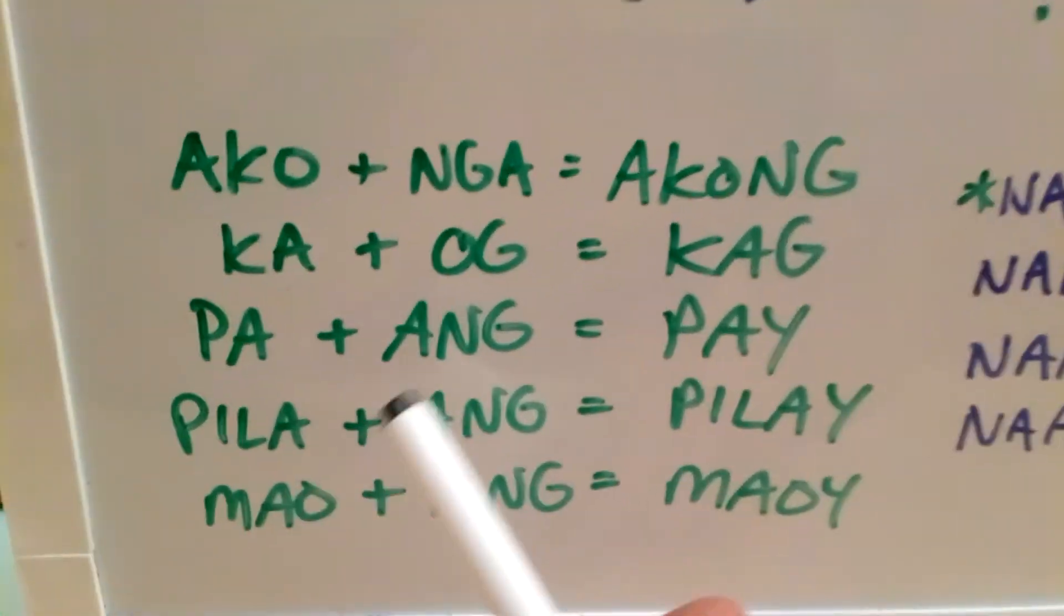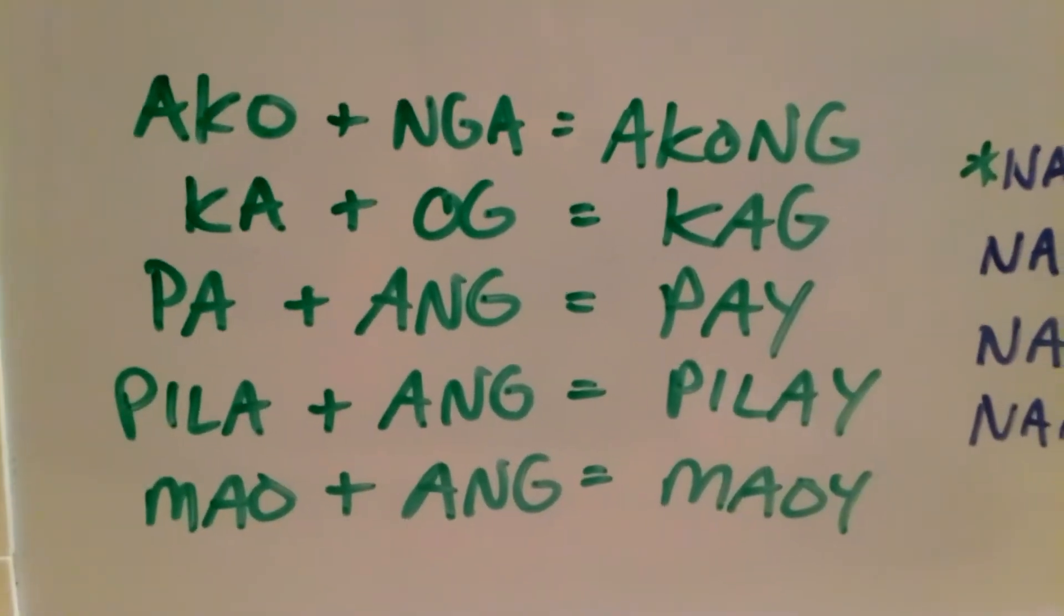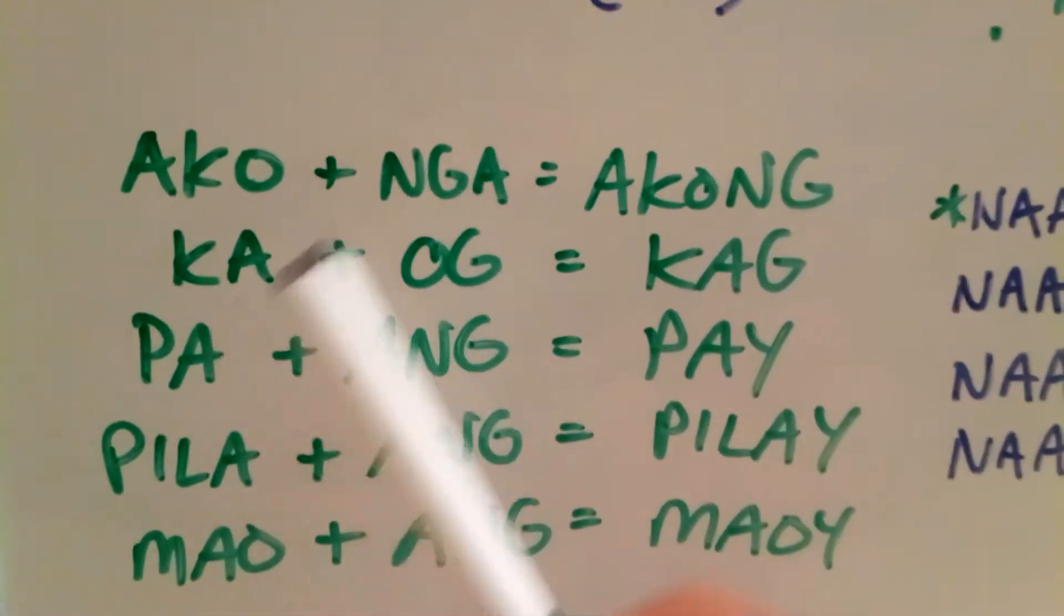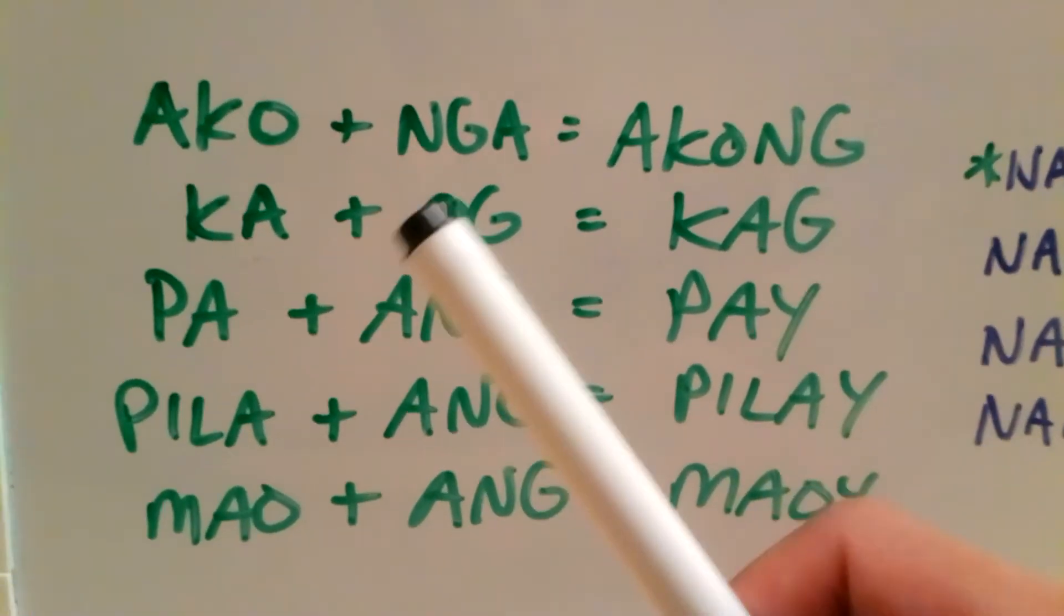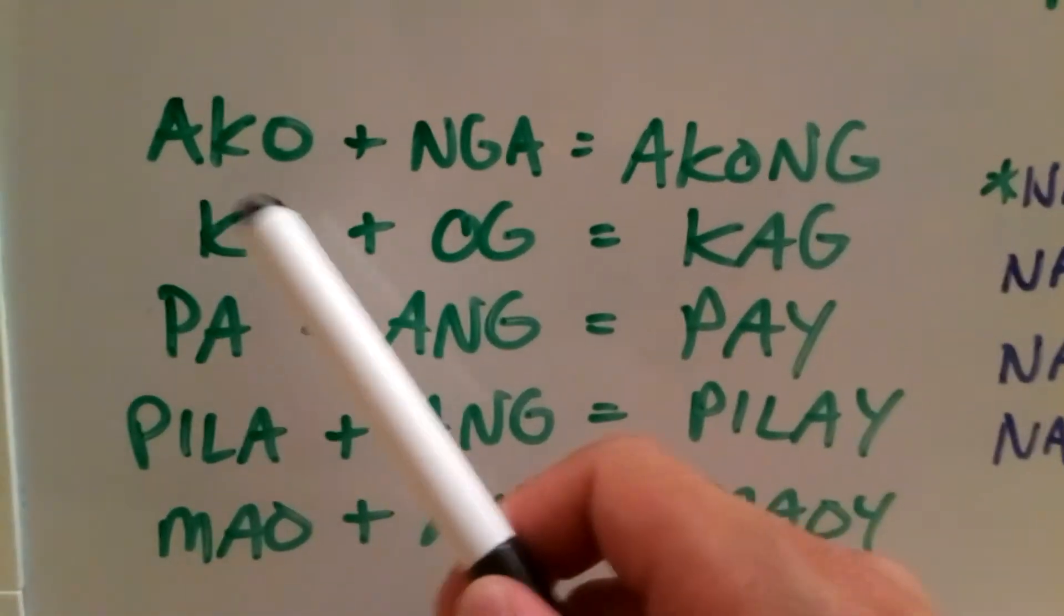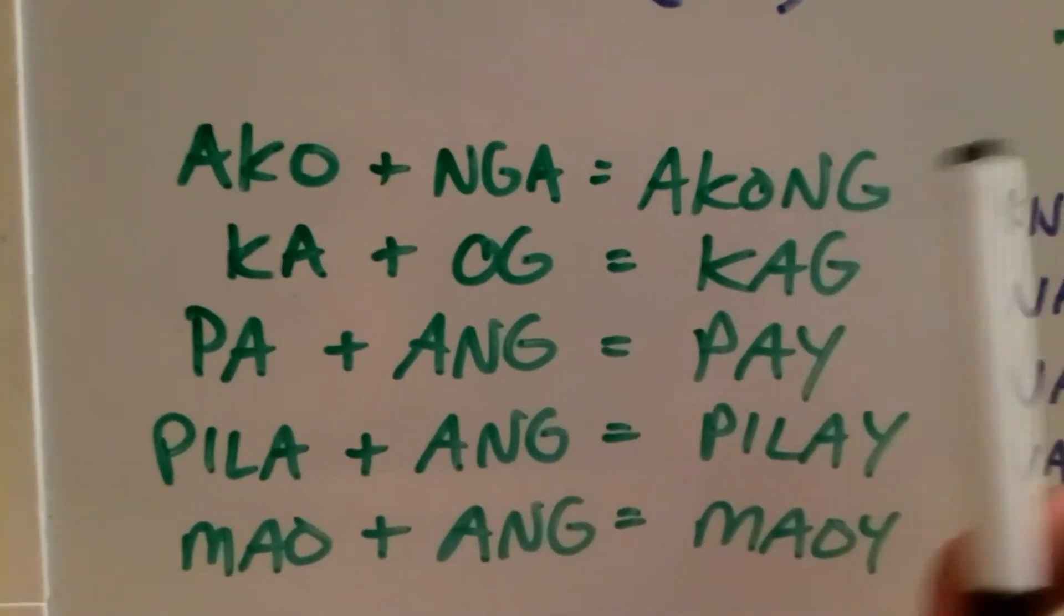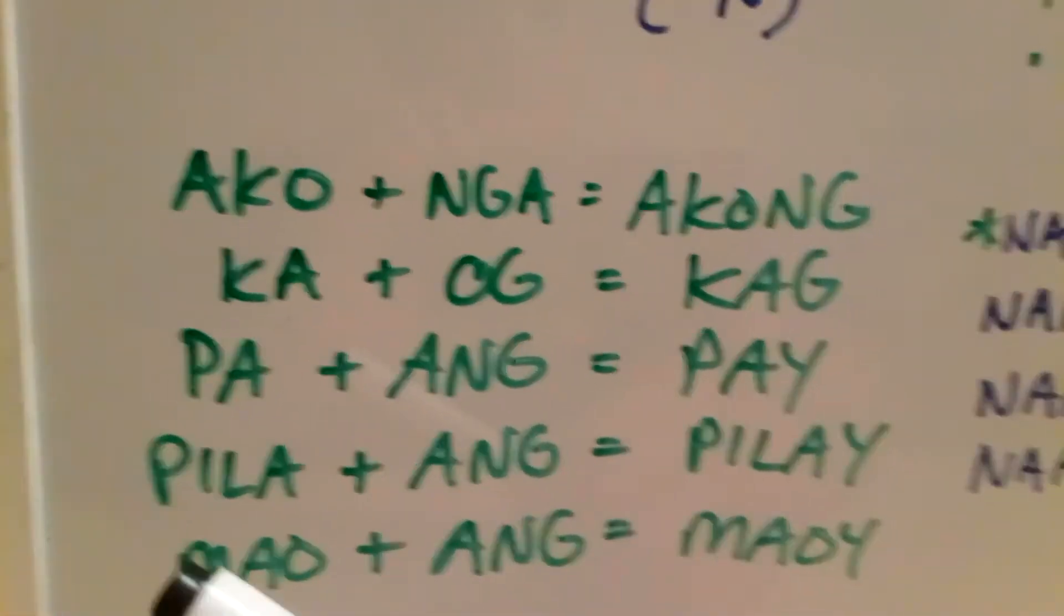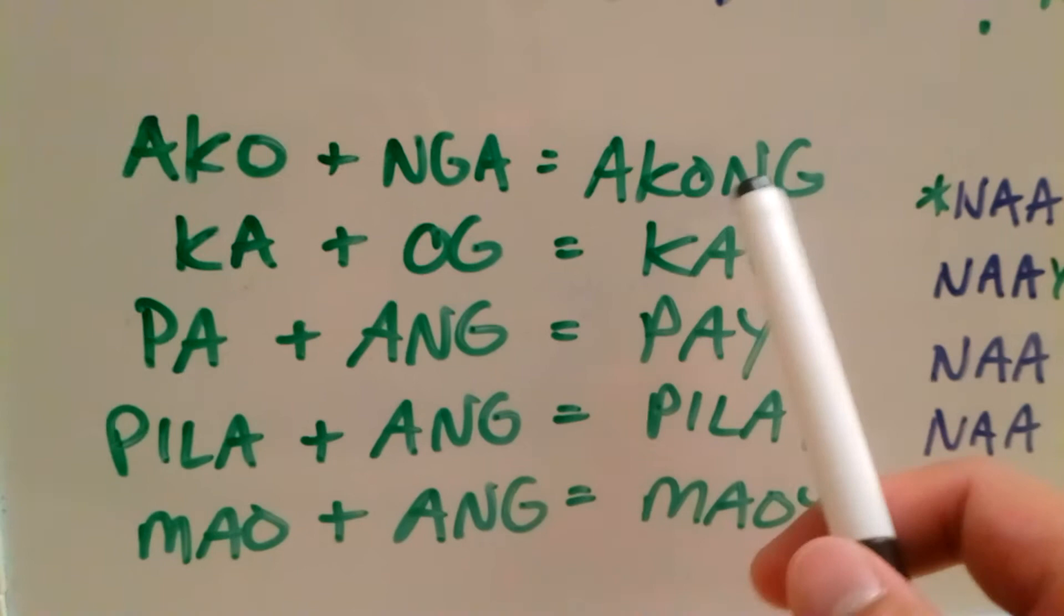Here, I put an example of how to contract words. So for example, ako plus nga, you get akong. And you can also say ako nga, which makes sense too. You can say ako nga or you can also say akong. Ang akong lapis. Ang ako nga lapis. But it's more commonly heard as akong lapis, ang akong lapis, instead of ang ako nga lapis. Though this is acceptable as well. It's just that people speak faster, they use this one. This is more commonly heard. And you're probably going to hear this 99% of the time.